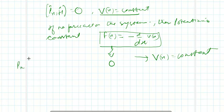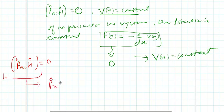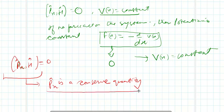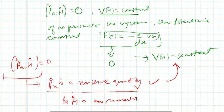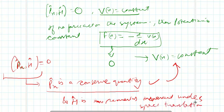To summarize: if Px and H commute, then Px is a conserved quantity — meaning momentum is conserved if the potential is constant, and the Hamiltonian remains invariant under space translation. That's all for this lecture. Thanks for watching.